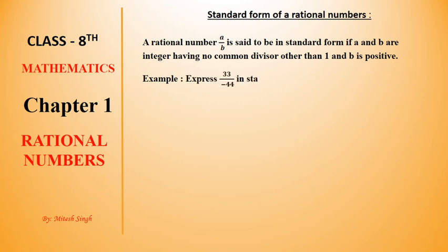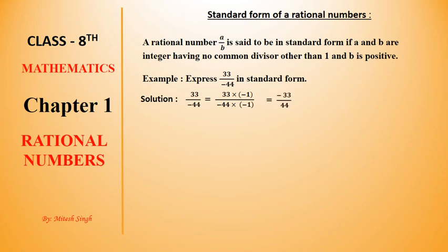Let's see examples. If there is a negative sign in the denominator, first of all change that negative sign by multiplying by minus 1. To remove the negative sign, we multiply by minus 1 because we cannot keep a negative sign in the denominator. After solving, the answer becomes minus 33 upon 44.